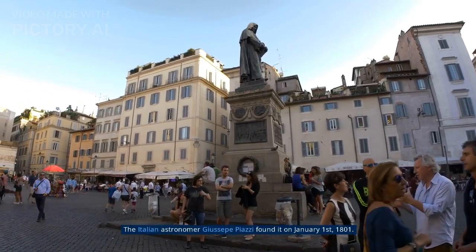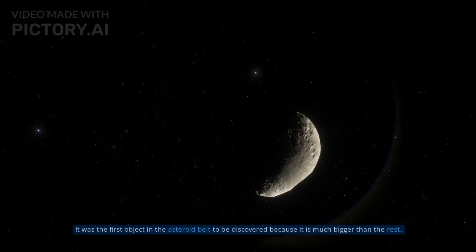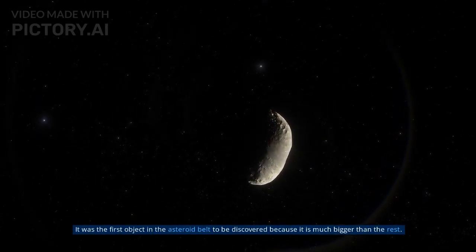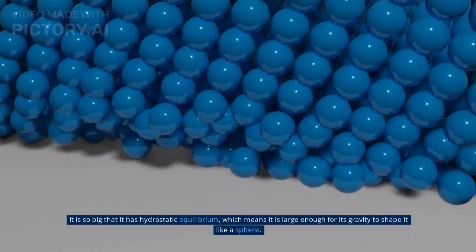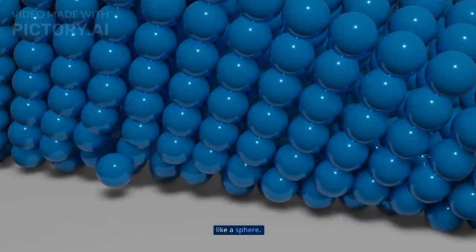The Italian astronomer Giuseppe Piazzi founded it on January 1, 1801. It was the first object in the asteroid belt to be discovered because it is much bigger than the rest. It is so big that it has hydrostatic equilibrium, which means it is large enough for its gravity to shape it like a sphere.